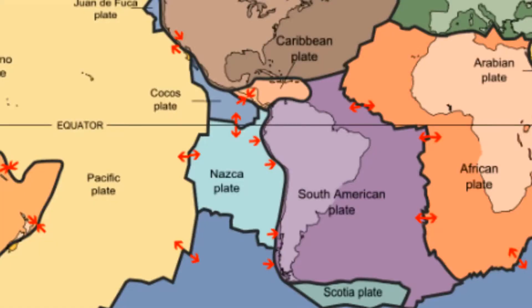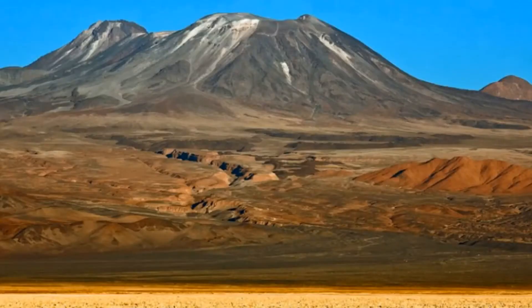An example is when the oceanic Nazca plate subducts underneath the continental South American plate. At this location, the Atacama Trench has been formed in the ocean and the volcanic mountain is located on the land.